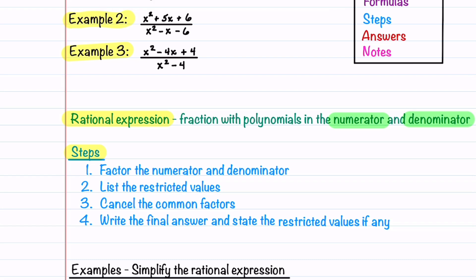The first step is to factor the numerator and denominator. The second step is to list the restricted values — these are values where the denominator is equal to zero. The third step is to cancel the common factors. And the fourth step is to write the final answer and state the restricted values if there are any.